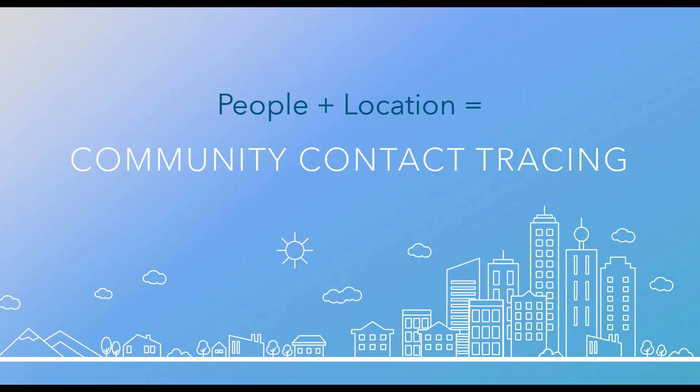Community contact tracing is a term we've coined to describe how location information complements the contact tracing process by accounting not only for identifiable contacts — people — but also for places in the community where cases have visited. This provides some huge benefits. By including location in our contact tracing workflows, we can uncover new insights about community transmission and see where new infections may be occurring, allowing us to focus investigations and take targeted action in those places that are driving new infections.